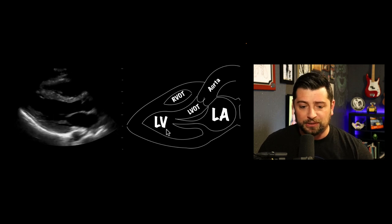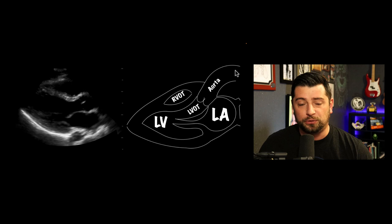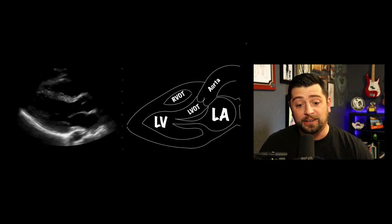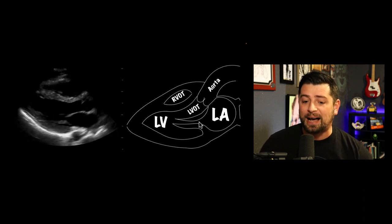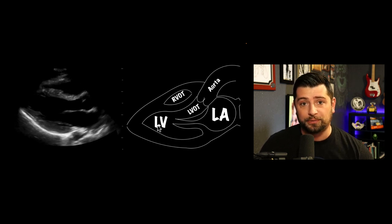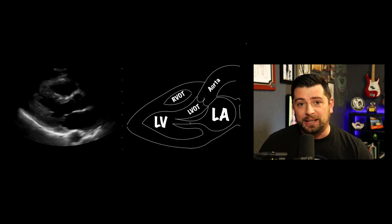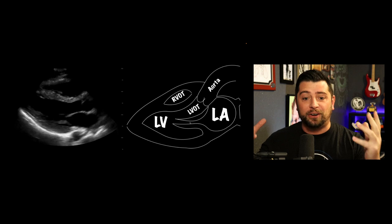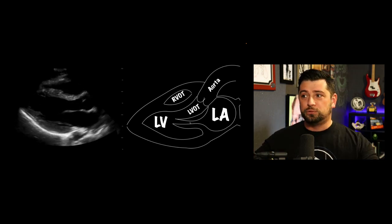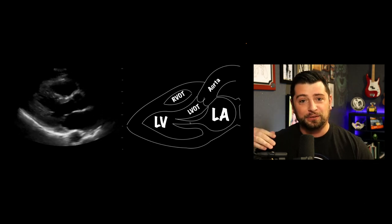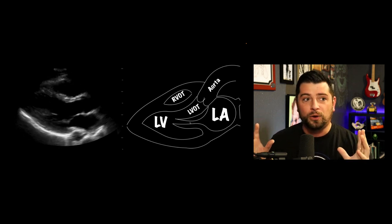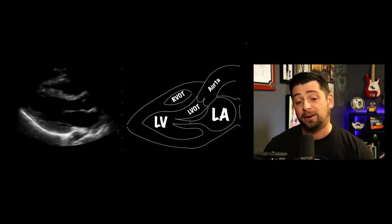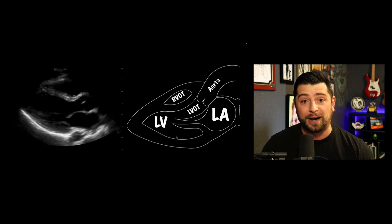Think about the cardiac cycle. The left ventricle contracts and ejects blood out into the aorta. At end-systole, the pressure in the left atrium is higher than in the left ventricle, and that gradient allows the mitral valve to open and fill the ventricle with blood. The way we visualize that is by seeing the mitral valve opening up — like those old Western saloon doors. If the mitral valve barely moves at end-systole, that tells you there's not much of a pressure gradient, meaning the ventricle didn't eject much during systole.